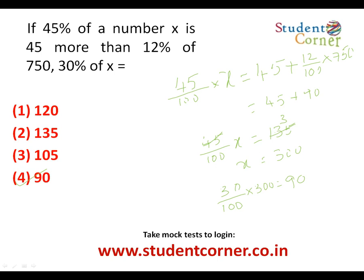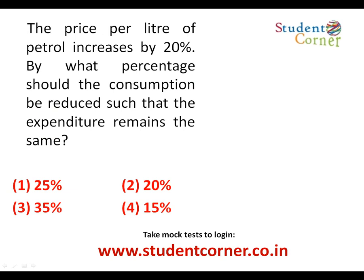Next model: the price per liter of petrol increases by 20%. By what percentage should consumption be reduced? The rule is: whenever there is a percentage increase, there must be a corresponding percentage decrease. Since 20% = 1/5 as a fraction, the percentage decrease is the numerator over (numerator + denominator) = 1/6, which is 16.66%.